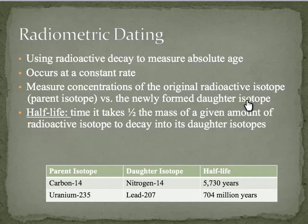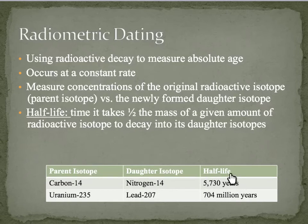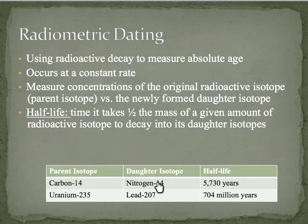To do this, we use a concept called half-life — the time it takes for half of the mass of a given amount of radioactive isotope to decay into its daughter isotopes. For example, carbon-14 decays into nitrogen-14, and that takes 5,730 years. Whereas uranium decays into lead, and that takes 704 million years. So our relative amounts of carbon versus nitrogen tells us how old something is.